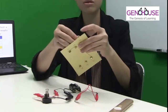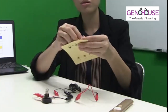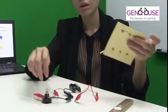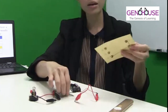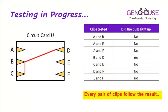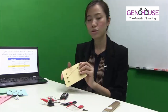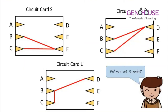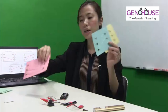Lastly, I check card U just to be thorough, in case Lynn used three cards instead of two. Testing B and C — it lights up. So the cards Lynn used are circuit card S, circuit card T, and circuit card U.